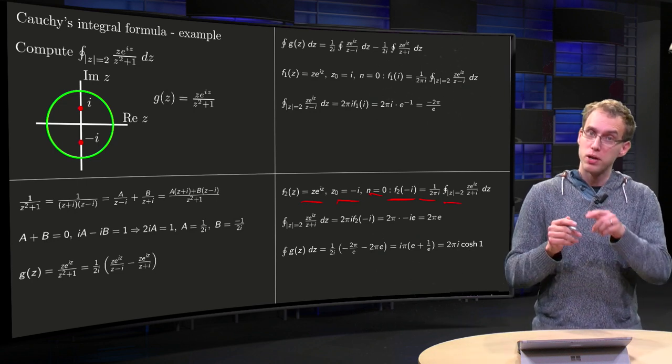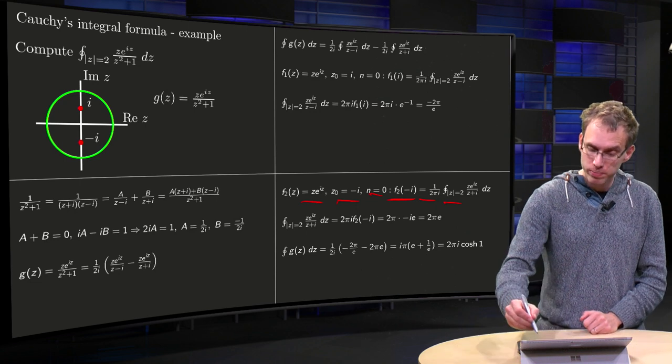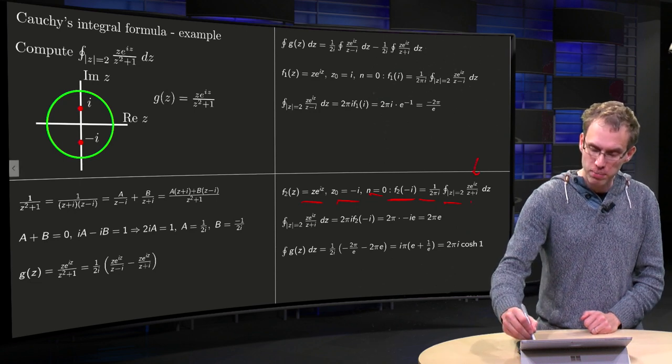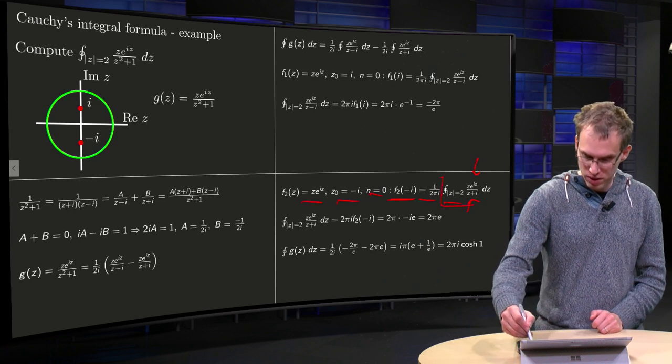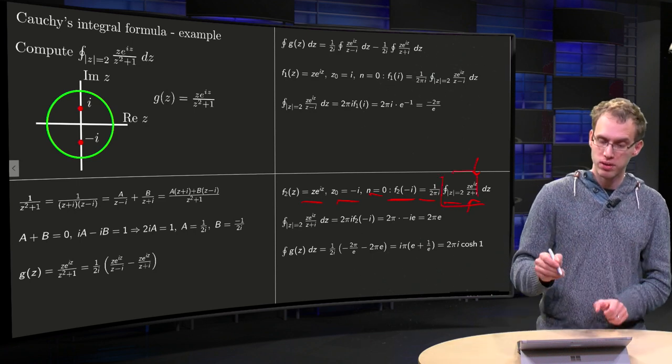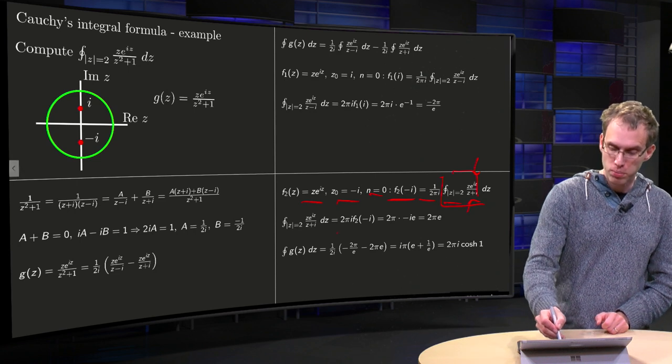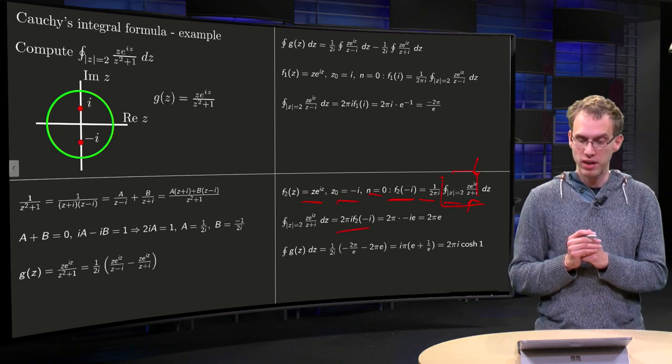Integral along the circle with radius 2, f(z) divided by z + i. And now we want this integral over here, so we can compute that integral.